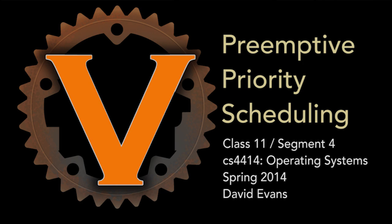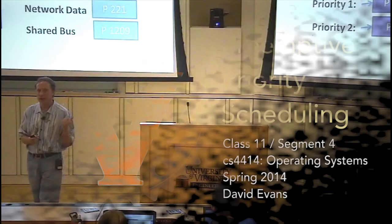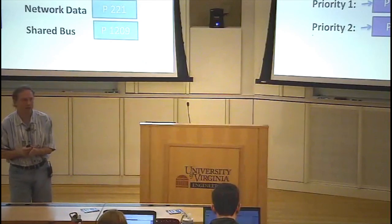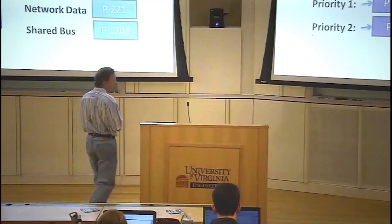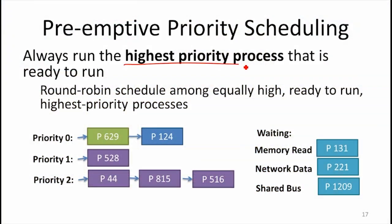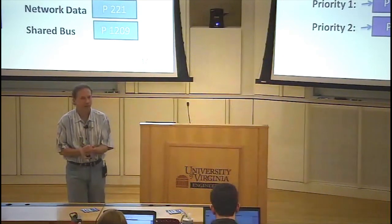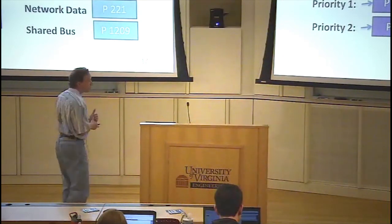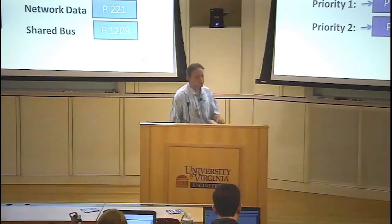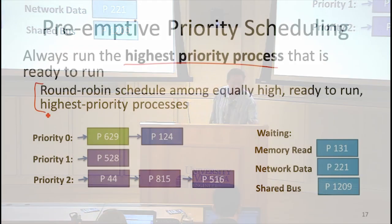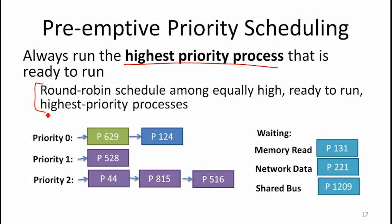Once we have priorities, how do we reflect those in the scheduler? One way to do that is to use priority preemptive scheduling. What priority preemptive scheduling means is that priorities are really important. Every time the scheduler has to pick a new process to run, it's always going to pick a higher priority process over a lower one — it looks for the highest priority process that's ready to run. If there are many equally high priority processes, it's going to round-robin schedule fairly among those.